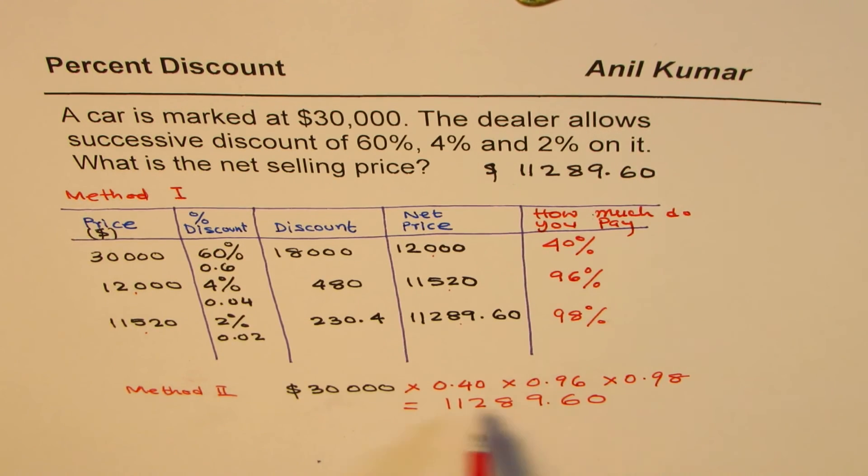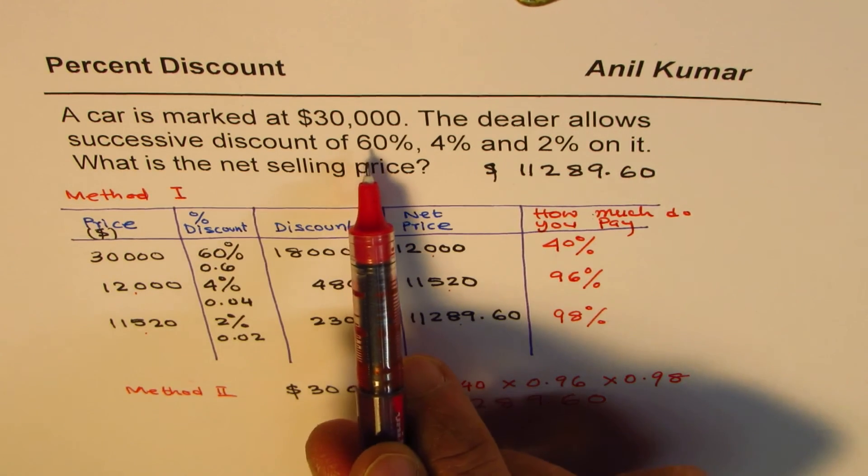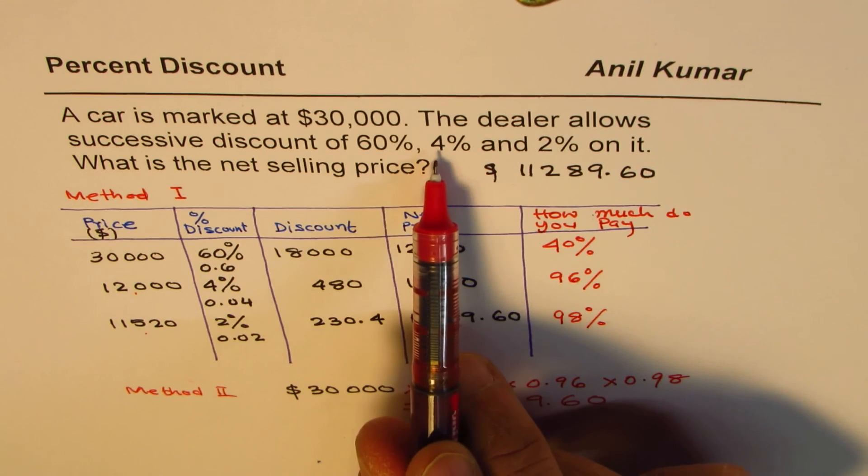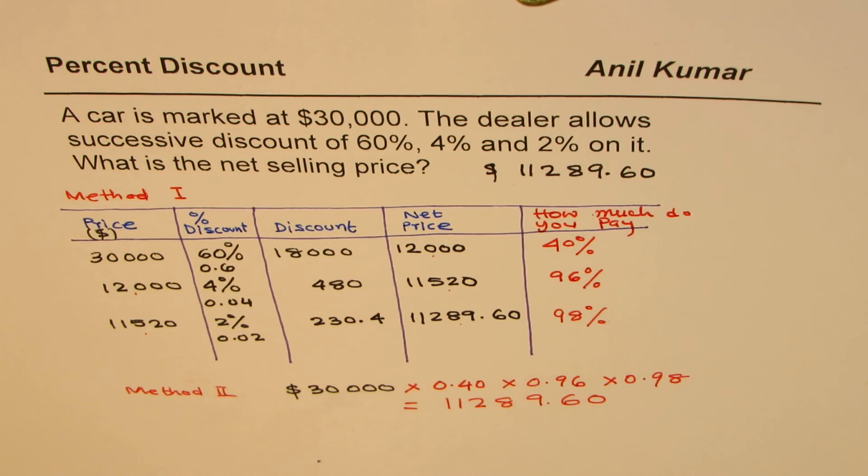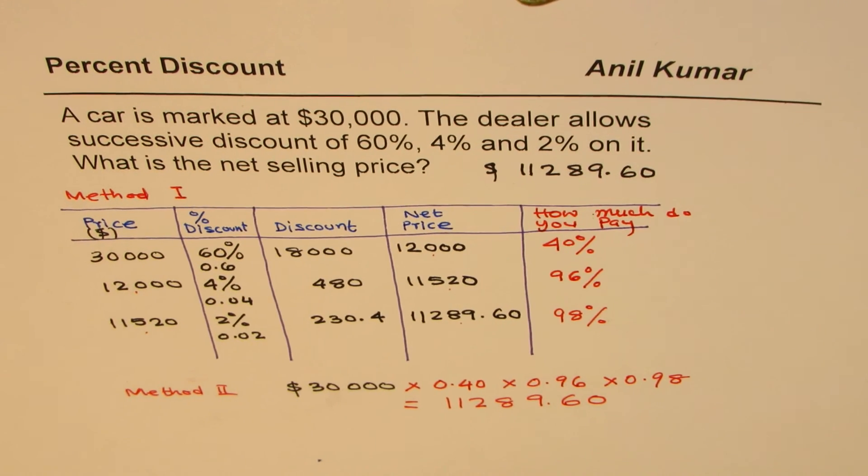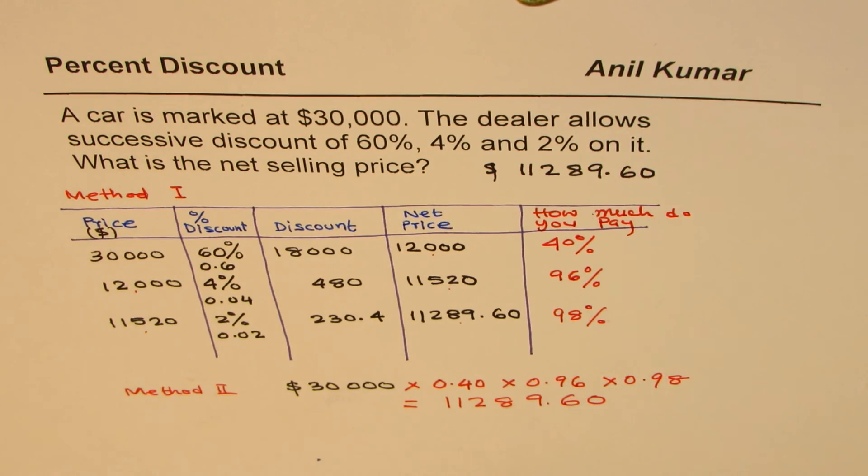We could do it in one sentence like this: successive discounts, what you pay. That is the discount, you pay 40%. That is the discount, you pay 96%. That is the discount, you pay 100 minus 2, 98%. I'm Anil Kumar and I hope that helps you understand the concept. It is that simple. You can always share and subscribe to my videos. Thank you and all the best.